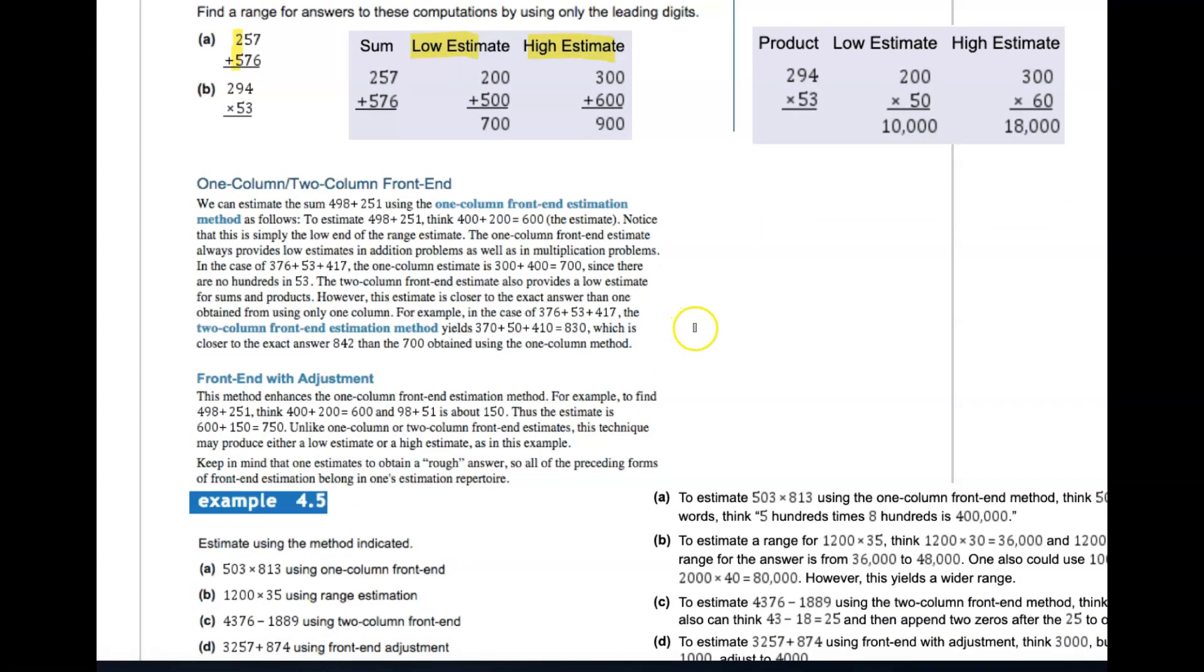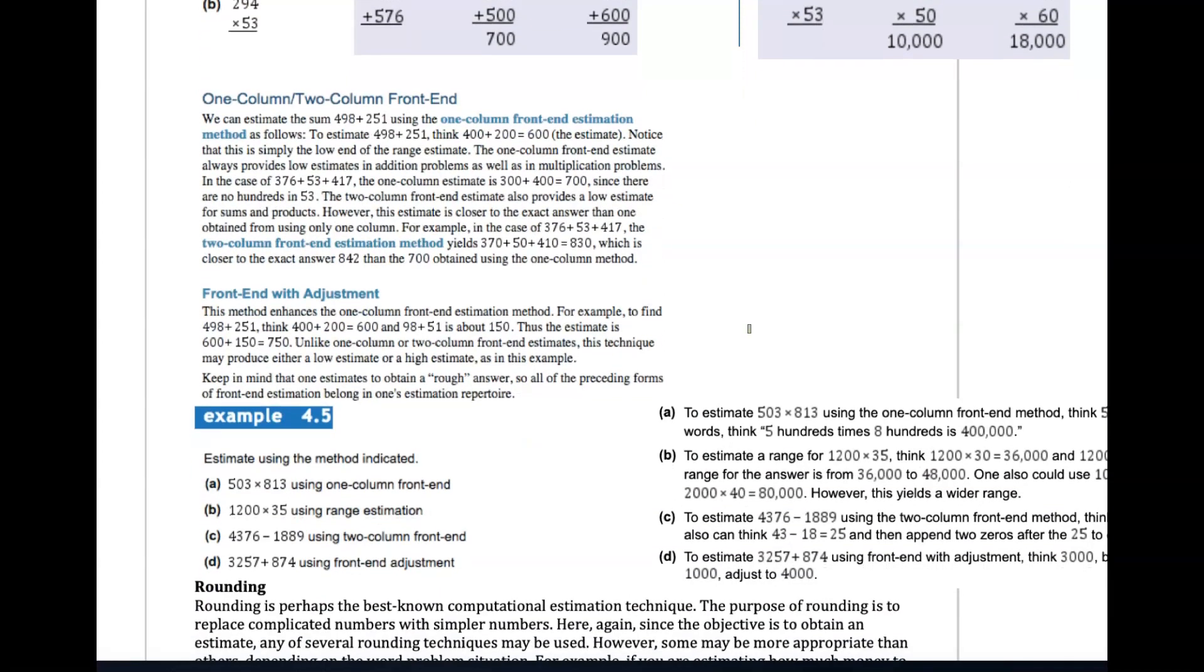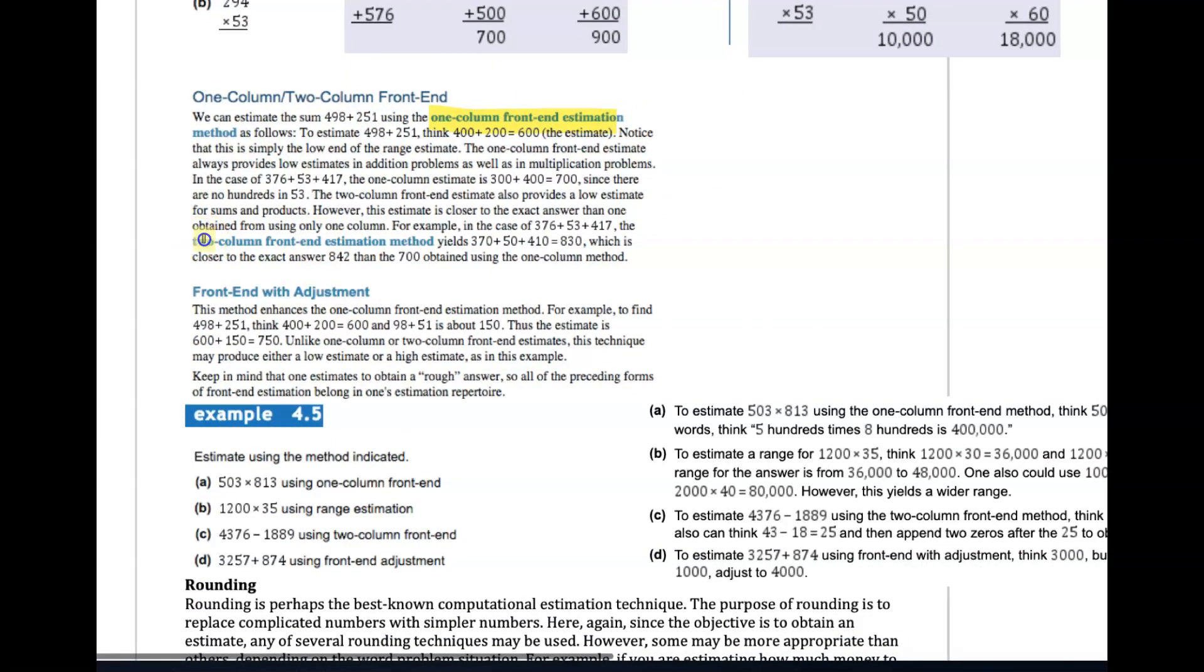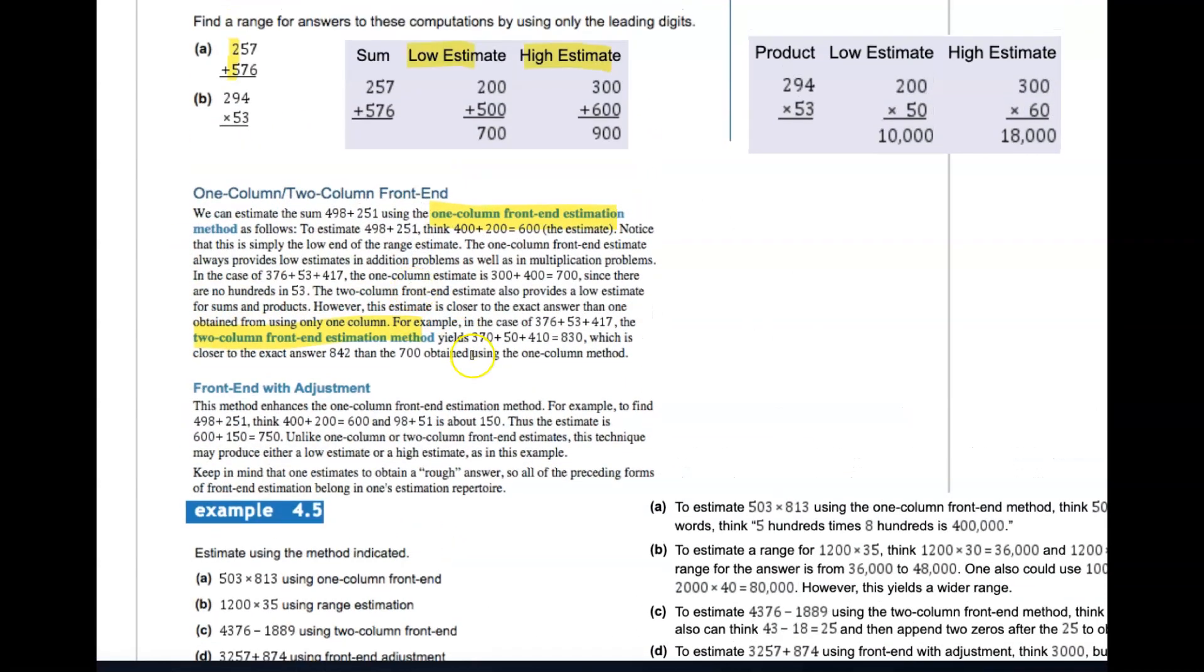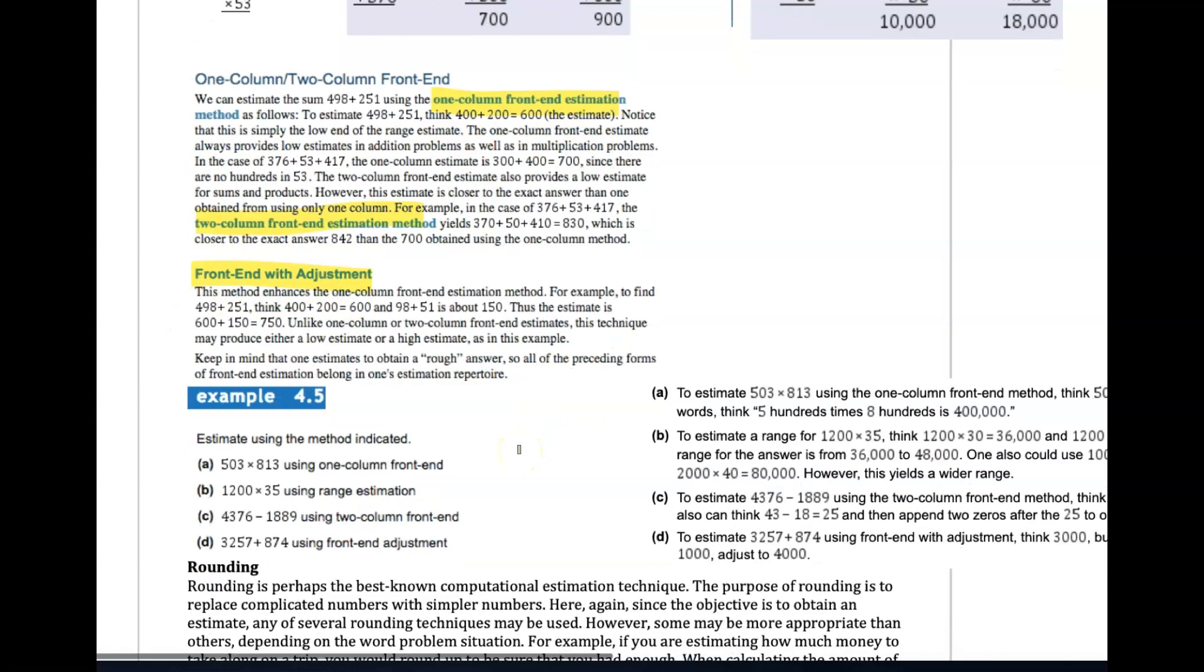Just like mental math strategies, there are tons of strategies for estimating. It's not about having to memorize them but about understanding how they work. You see all these different methods: one-column front-end estimation, two-column front-end. They should make some sense - front-end with adjustment.